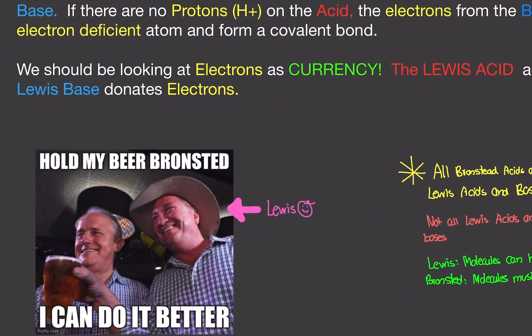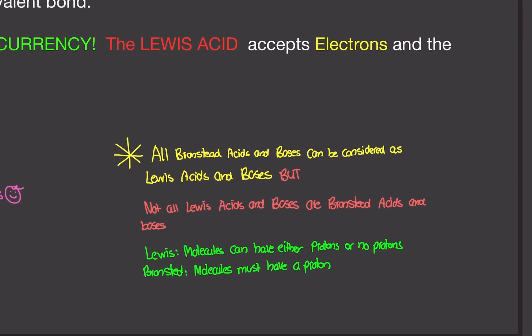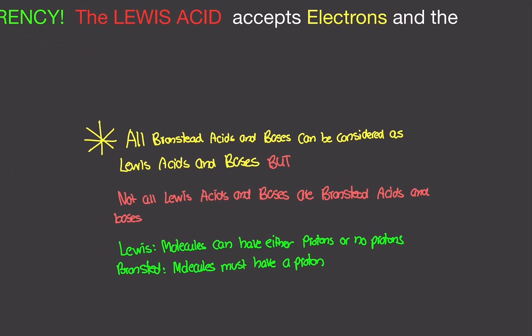I made a meme — Lewis says, hold my beer, Bronsted. Here's a very common fill-in-the-blank question on the midterm: all Bronsted acid-bases can be considered Lewis acids and bases, but not all Lewis acid-bases are Bronsted acids and bases. Because Lewis molecules can have either protons or no protons, while Bronsted molecules must have protons.